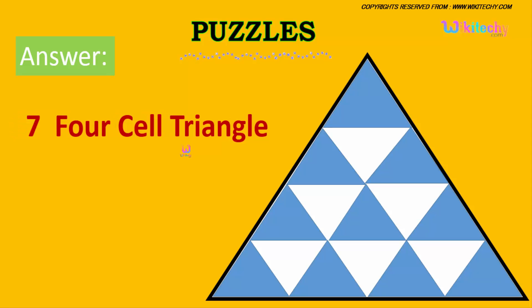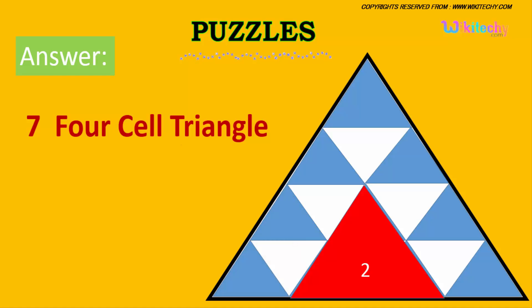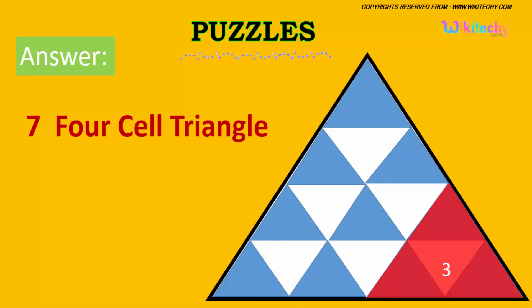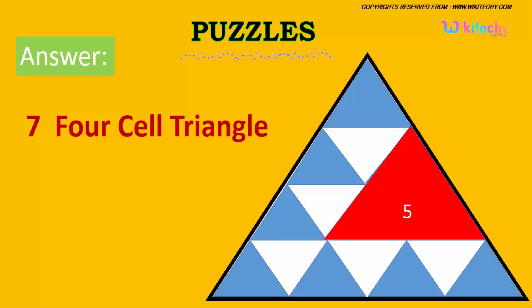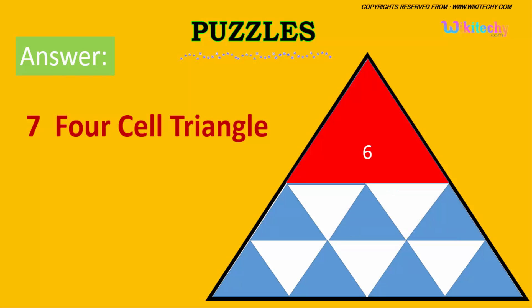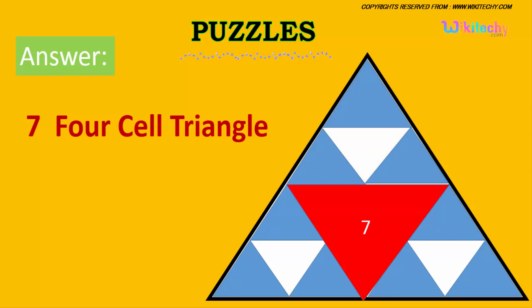And now it's the 7 four-cell triangles: 1, 2, 3, 4, 5, 6, 7. So it's 7 four-cell triangles.